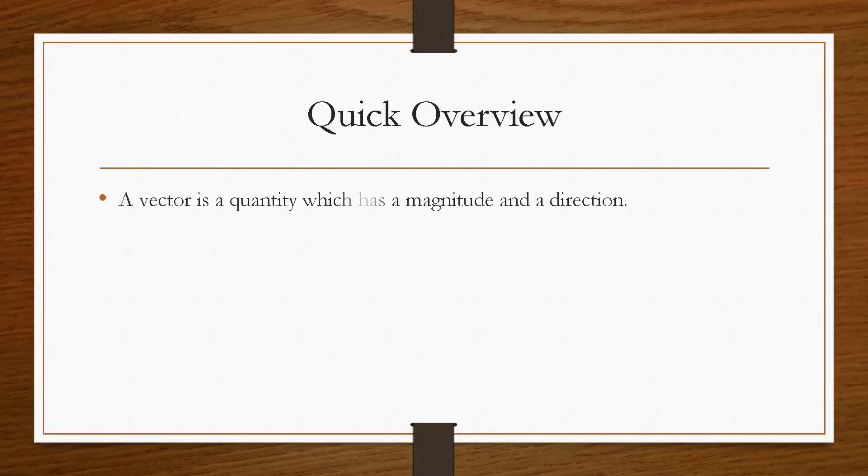Now if we take a quick overview, a vector is a quantity which has a magnitude and a direction. So that's what distinguishes a vector from a two-dimensional standard coordinate system. Now the magnitude refers to the size of the vector and the direction of course refers to the movement of the vector.